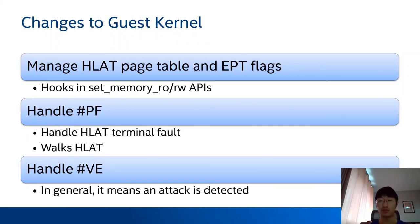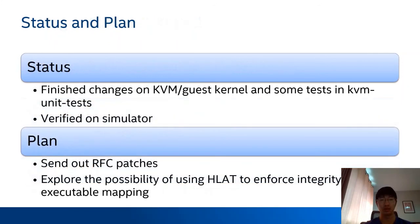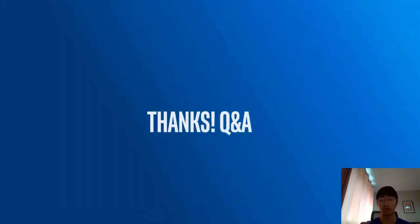The guest kernel also needs to handle virtualization exceptions — in general this means an attack has been detected by the hypervisor. Regarding our status, we have finished changes on the KVM and guest kernel sides and developed some tests in KVM unit tests, verifying this solution in a simulator. Our plan is to send out the RFC patches in the future. Currently we focus on protecting non-writable mappings, and in the future I'd like to explore the possibility of using HLite to enforce the integrity of non-executable mappings. That's all I wanted to share — do you have any questions?